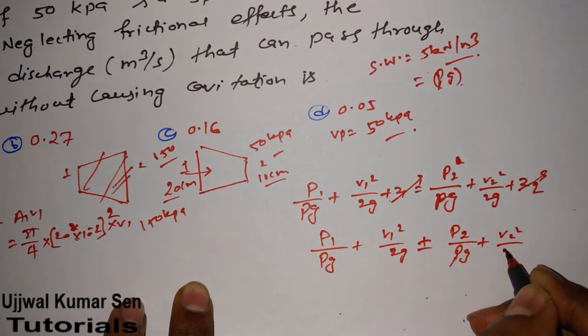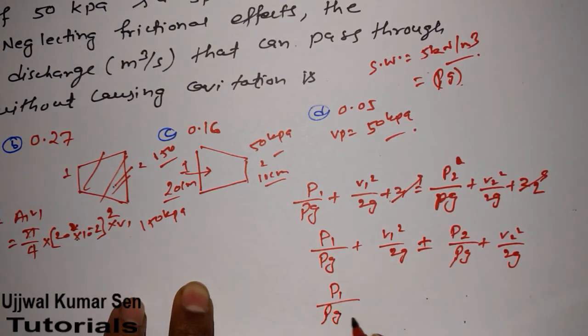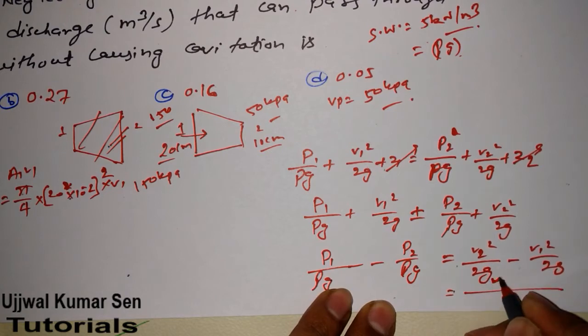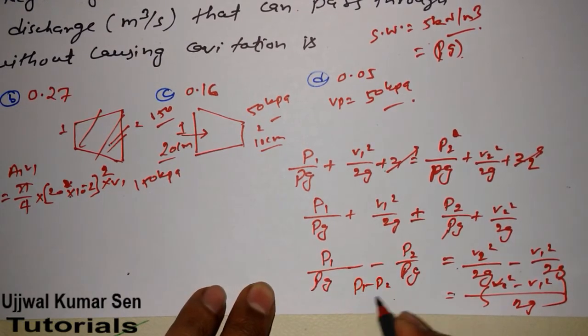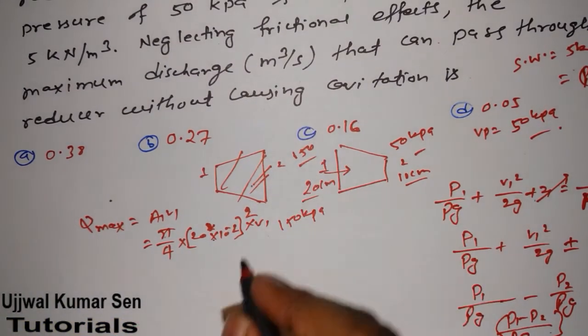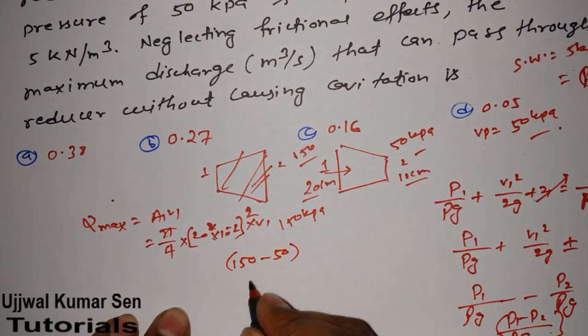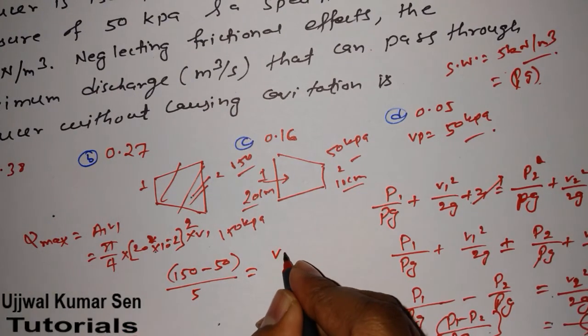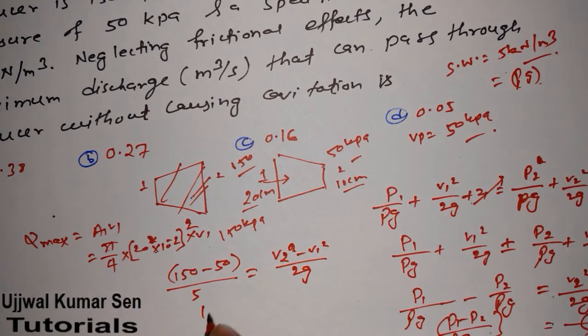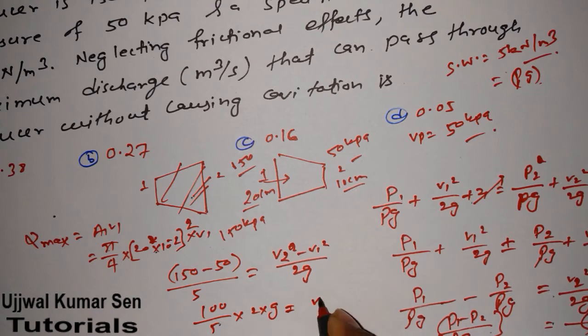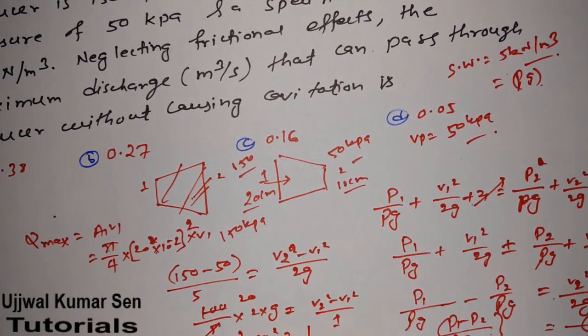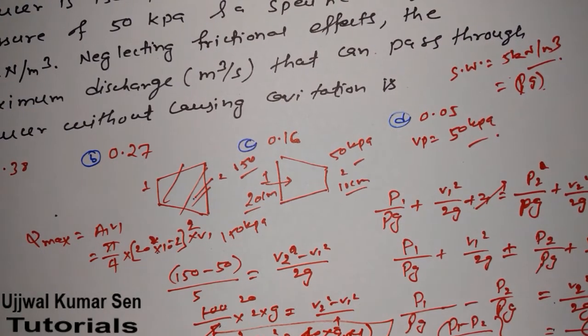What remains is P₁/(ρg) + V₁²/(2g) = P₂/(ρg) + V₂²/(2g). Rearranging: (P₁ - P₂)/(ρg) = (V₂² - V₁²)/(2g). The value is (150 - 50)/(ρg), where ρg is specific weight, which is 55. So (V₂² - V₁²)/(2g) = 100/55 × g. Therefore V₂² - V₁² = 40 × 9.81.